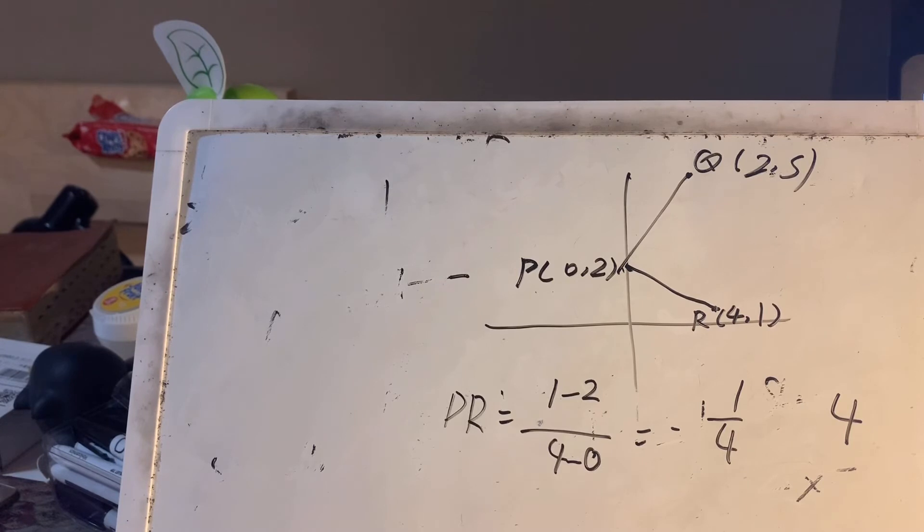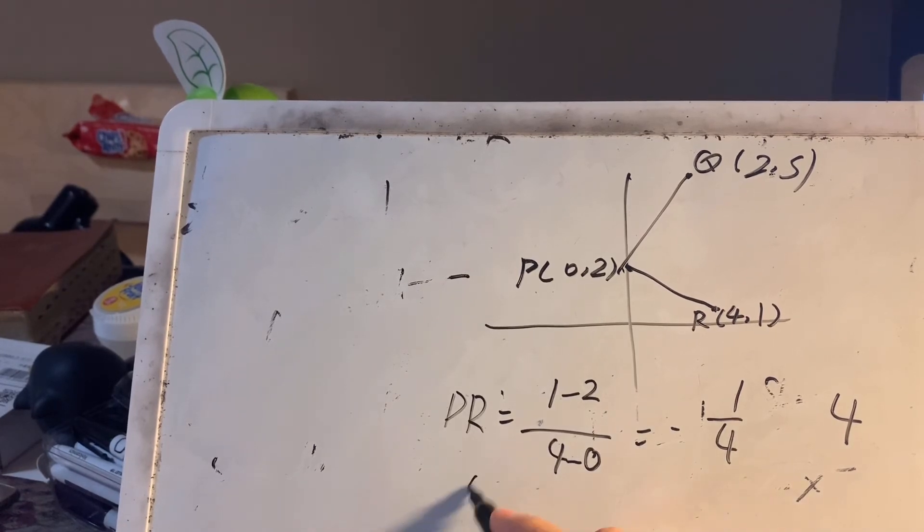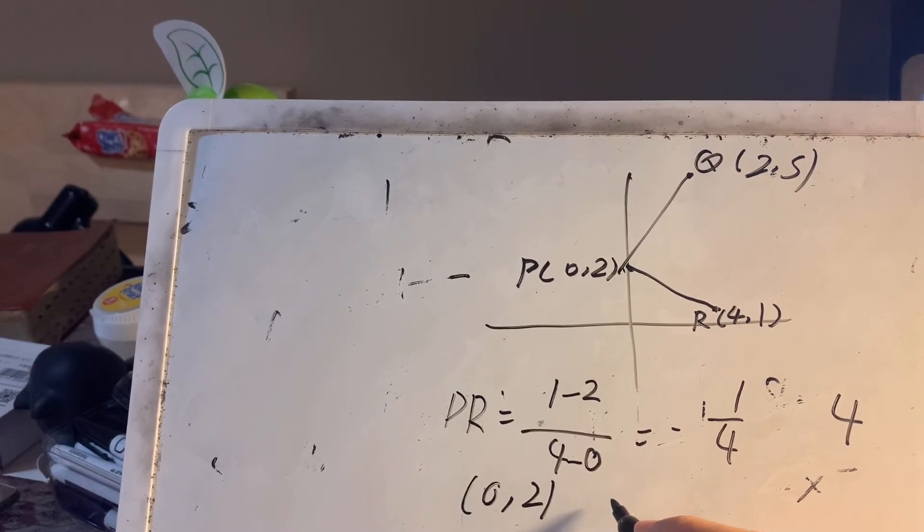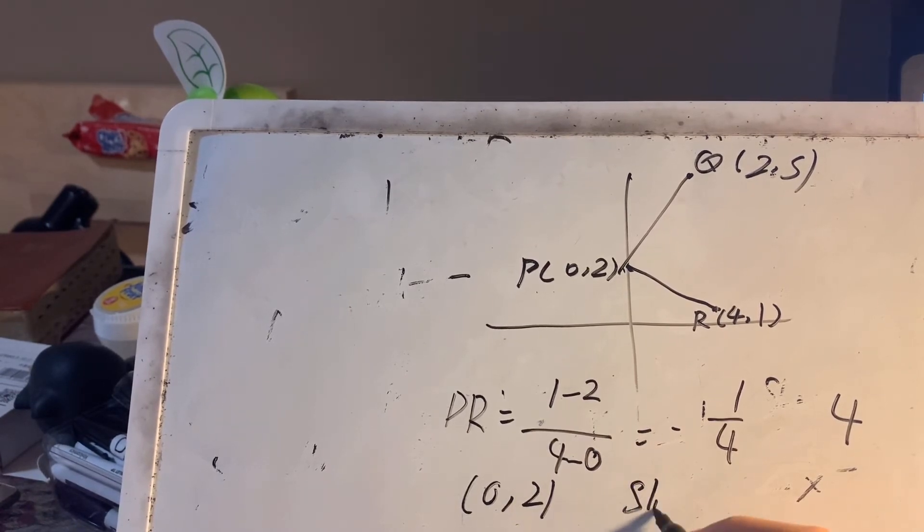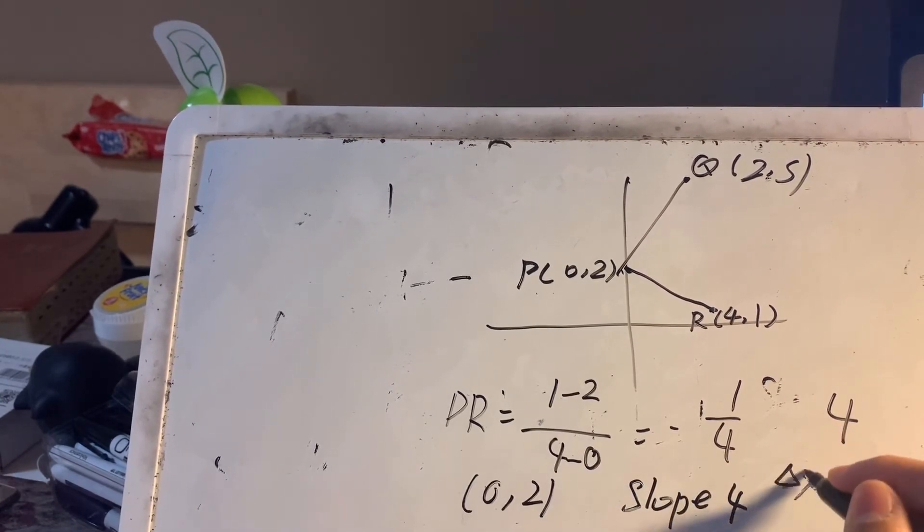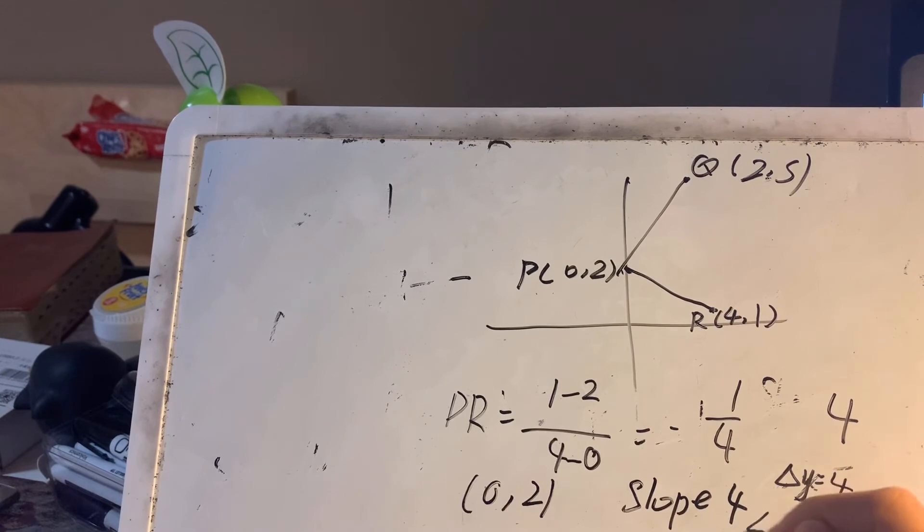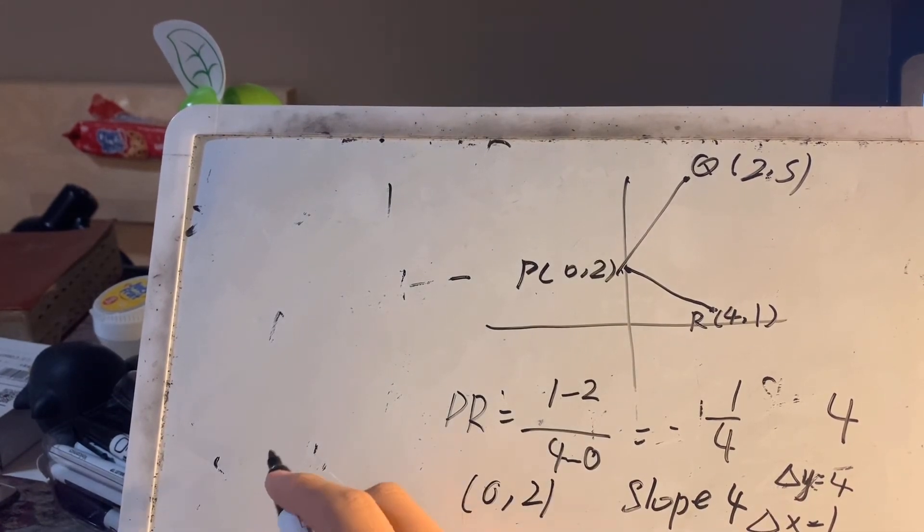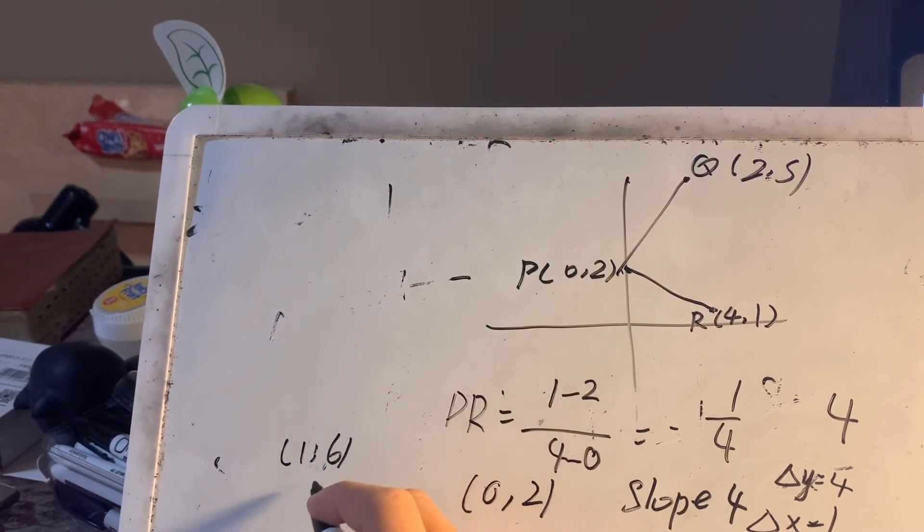So a line with starting point 0, 2, and ending point, and slope 4, which means change of Y is 4, while change of X is 1. So which means the next point will be 1, 6, and the next point will be 2, 10.